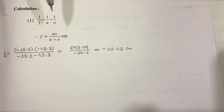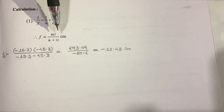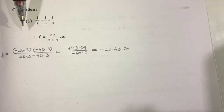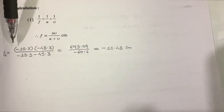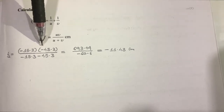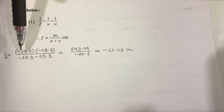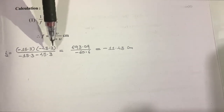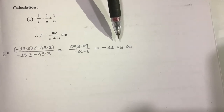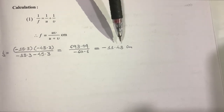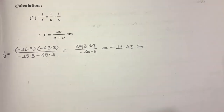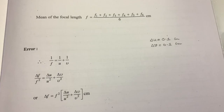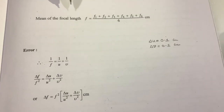Now use the formula f equals uv upon u plus v to calculate the focal length. So f1 equals minus 15.3 multiplied by minus 45.3, divided by minus 15.3 minus 45.3. Solving this gives the answer minus 11.43 centimeter. Now carry out calculations for the other five observations and take the mean of all focal lengths.